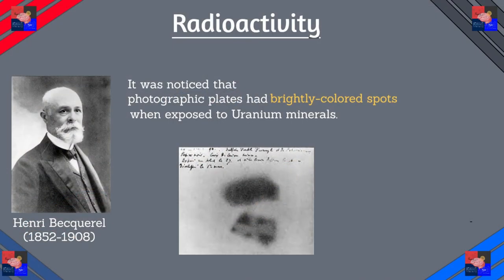When radioactivity was first discovered by Henry Becquerel in 1896, it was found that photographic plates would have brightly colored spots when exposed to uranium minerals. These would eventually be discovered to be of three types. Now since it was 1896, we weren't aware of the subatomic particles involved during the reaction, so we just named them after Greek letters — very typical — and identified them later. Let's go over these three.